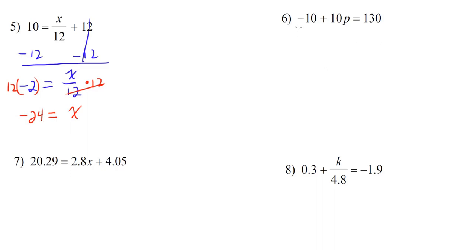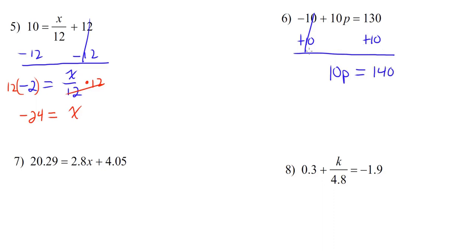Number 6: negative 10 plus 10p equals 130. Step 1, undo addition and subtraction. We have to get rid of this negative 10, so we're going to add 10 to both sides. On the left, the 10s cancel out, leaving us with 10p. And on the right, 130 plus 10 is 140. Step 2, undo multiplication or division. So we're going to divide both sides by 10. On the left, the 10s cancel out, leaving us with p. And on the right, 140 divided by 10 is 14.